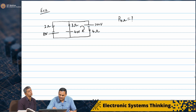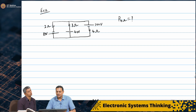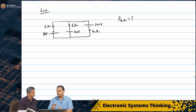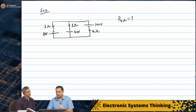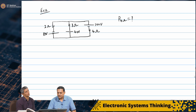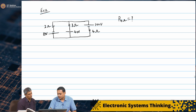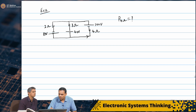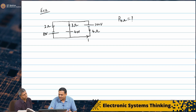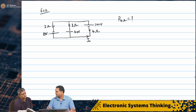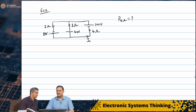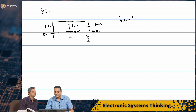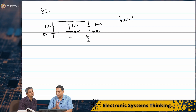I am going to first set my reference direction. This is the only current I am interested in, so I will call it I₀ flowing in this direction. My gut feeling is that the largest voltage source is most likely going to be delivering power, so I assume current flows out of that largest source.